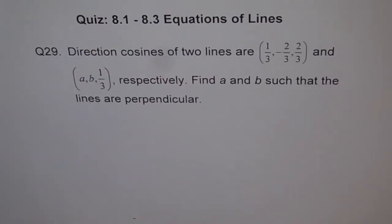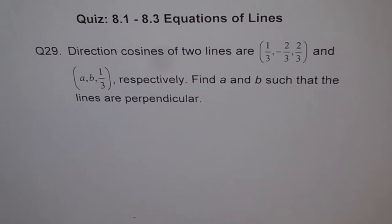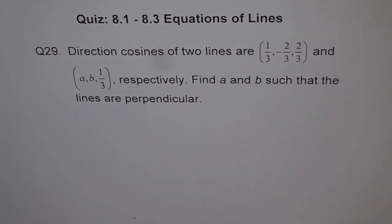Question 29. Direction cosines of two lines are 1/3, -2/3, 2/3 and A, B, 1/3 respectively. Find A and B such that the lines are perpendicular.